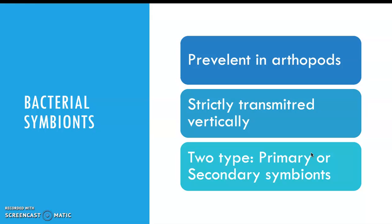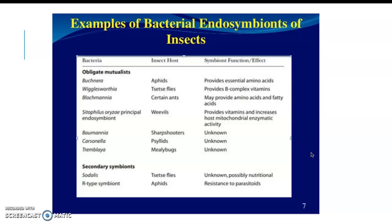There are two types of bacterial symbionts — it can either be primary or secondary. Buchnera, which is what we're going to talk about, is a primary symbiont for the aphids. In this picture we can see the obligate mutualisms, which are your primary symbionts, and then some examples of secondary symbionts.